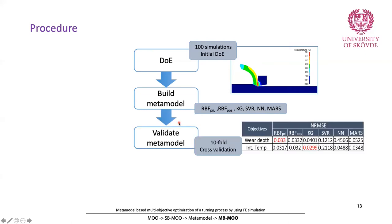We validated all these models to see which one performed better and gave the lowest error. For the second objective — wear depth — RBF-pre, our proposed approach, gave the best result. For the third objective — temperature — kriging gave the best results. So for the second objective we used RBF-pre, and for the third objective we used kriging, instead of running simulations.